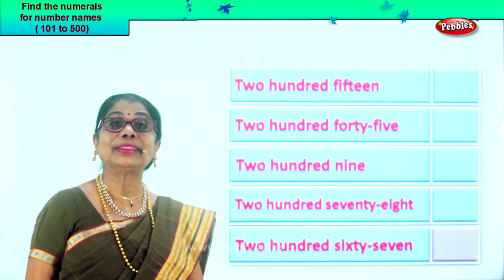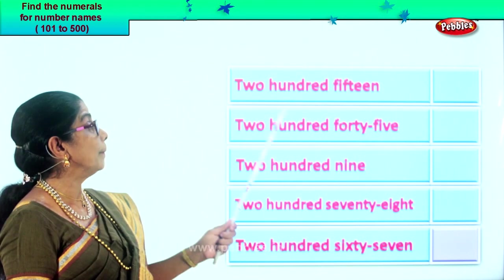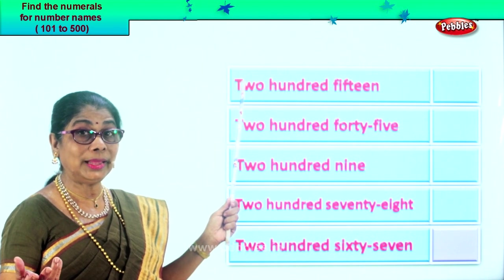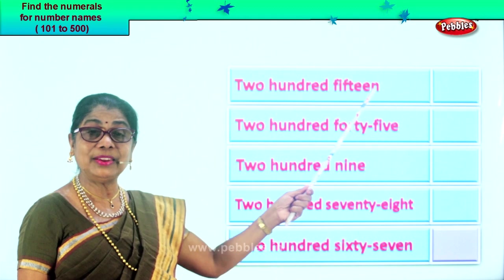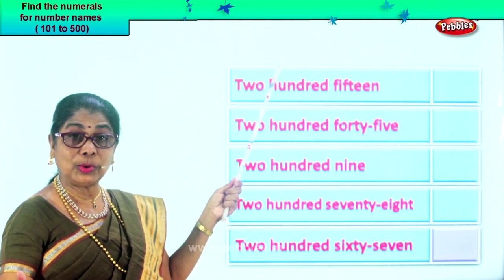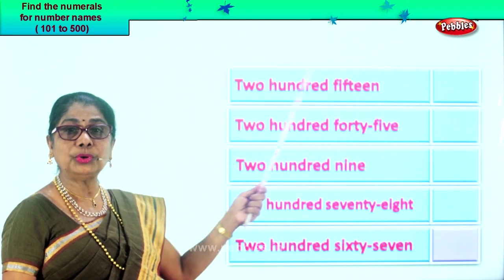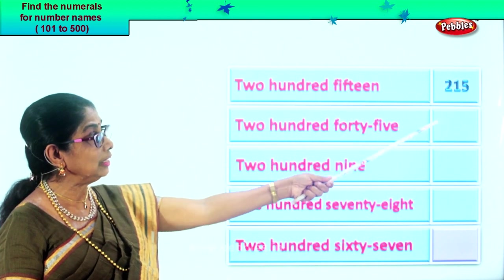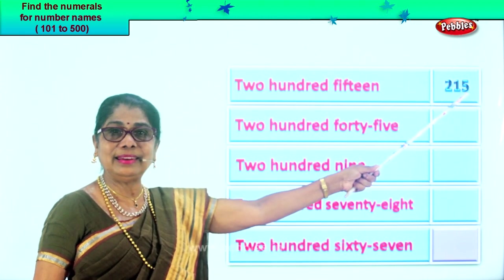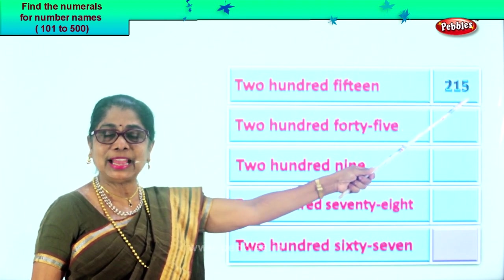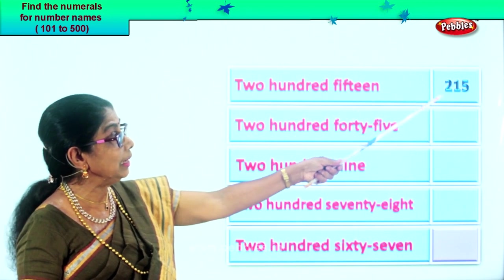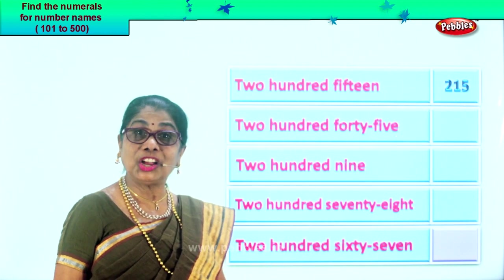Shall we take another exercise? Here we are. Let's read the first one. Two hundred fifteen. Two in the hundredth place. Fifteen means one in the tens place, five in the ones place. When you write the numeral, two fifteen — two hundred fifteen. Two in the hundredth place, one in the tens place, five in the ones place. Let's read: two hundred fifteen.